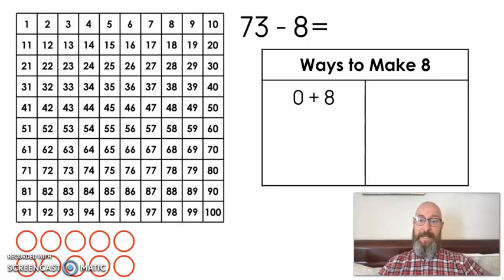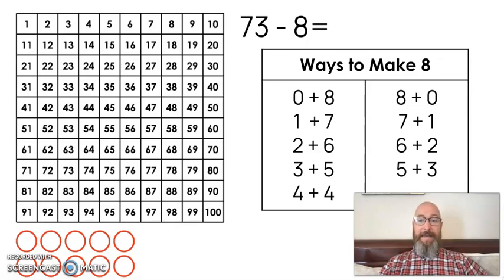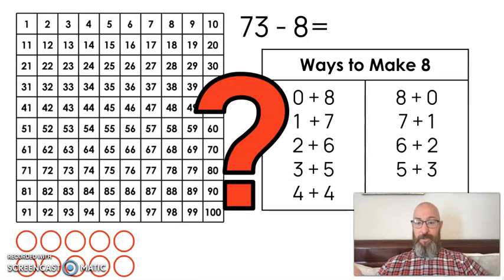0 plus 8, 1 plus 7, 2 plus 6, 3 plus 5, 4 plus 4, 8 plus 0, 7 plus 1, 6 plus 2, 5 plus 3. Those are all different ways to make 8. So again, here's the question: which one do I use?